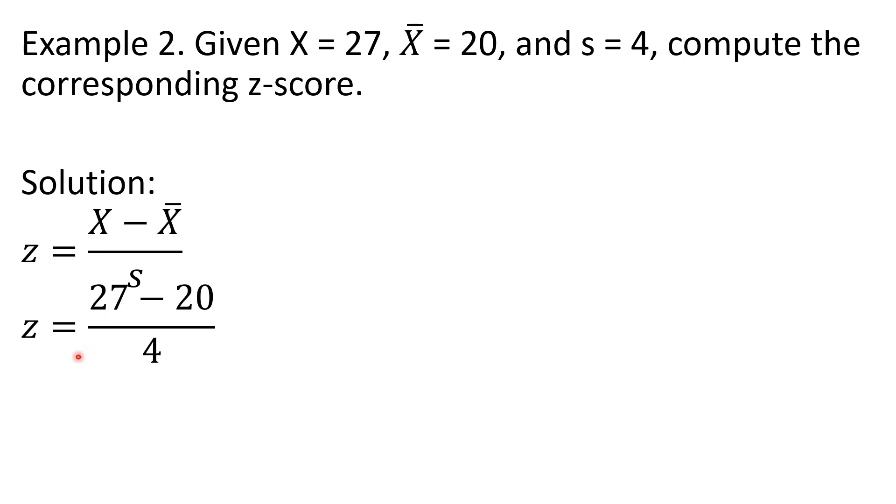we have Z is equal to 27, the given score minus the given mean over the given standard deviation. 27 minus 20 is 7, divided by 4 is 1.75.